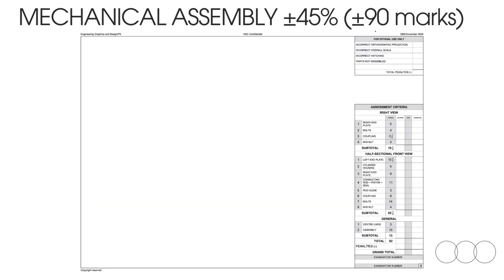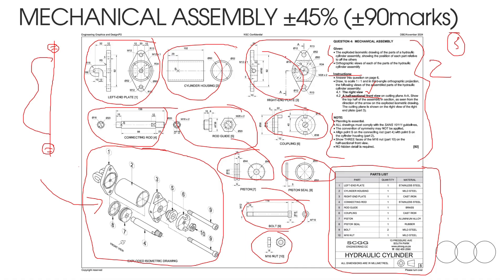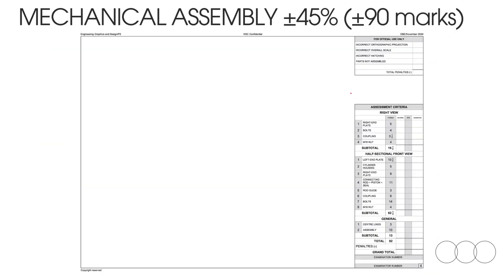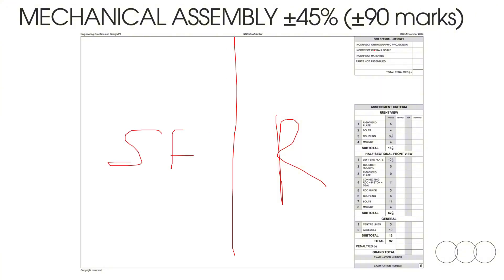On the next page, this is where you're going to do the drawing. For this instance, they say you should do a right view and a half-sectional front view. So the right view you will draw here and the sectional front view on this side. Be aware of some penalties: if you switch the two views — putting the right view on the left and the front view on the right — you will get a penalty of minus two. If you've used the incorrect scale, you'll get a penalty of minus two.